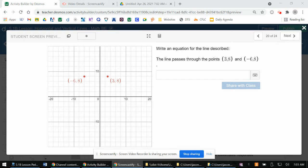It says write an equation for the line, and we want the line to pass through (3, 8) and (-6, 8).